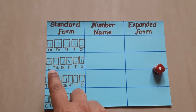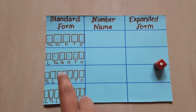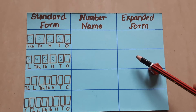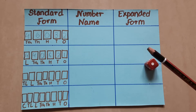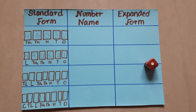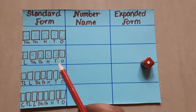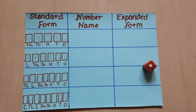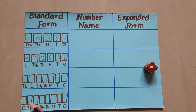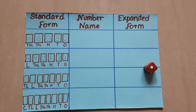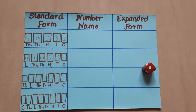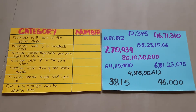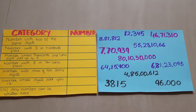Once you have rolled the dice and formed your number, you first read the number according to the places, then write the number name, and then write the expanded form — either in words or in numerals. Playing with dice has always been one of the favorite activities of kids, so this is how you can play and revise number system, place value, and expanded form.